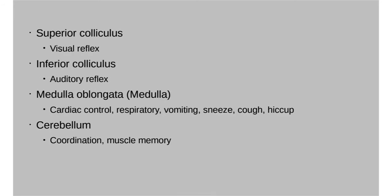In the lab model brain, we saw the corpora quadrigemina — an intimidating name that simply translates to quadruplets. There's a left and right superior colliculus and a left and right inferior colliculus, so together these four structures make up the corpora quadrigemina.